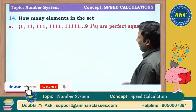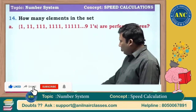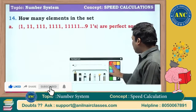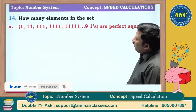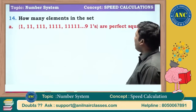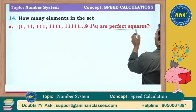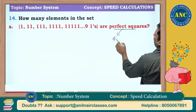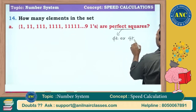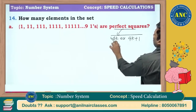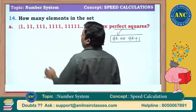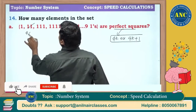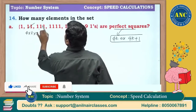Next one, just an idea. Now if you see here, this is the question: how many elements in the set {1, 11, 111, 1111, ...} are perfect squares? Any perfect square is of the form 4k or 4k+1.